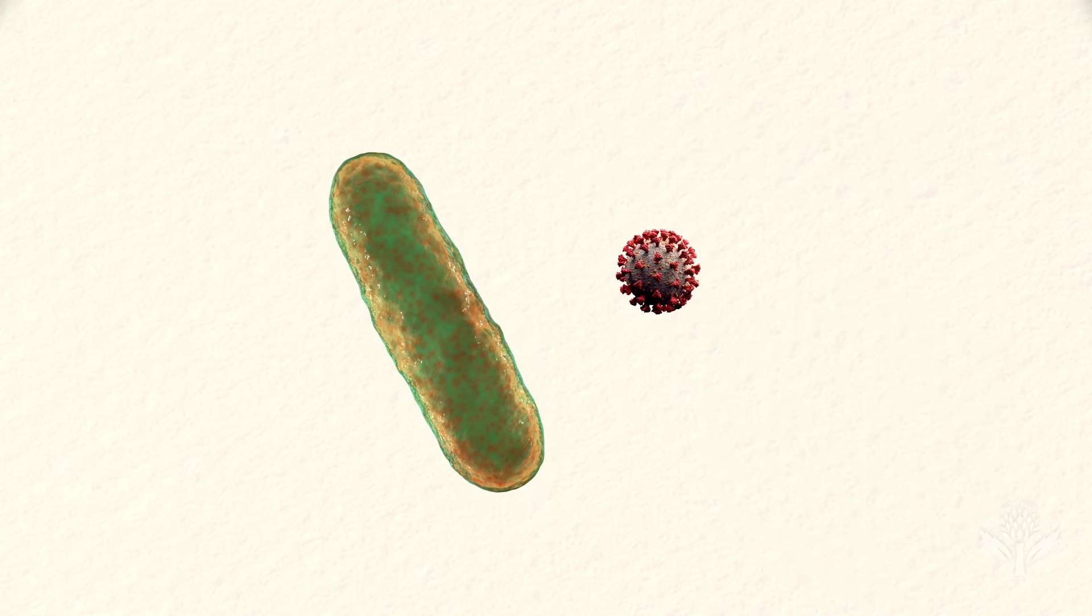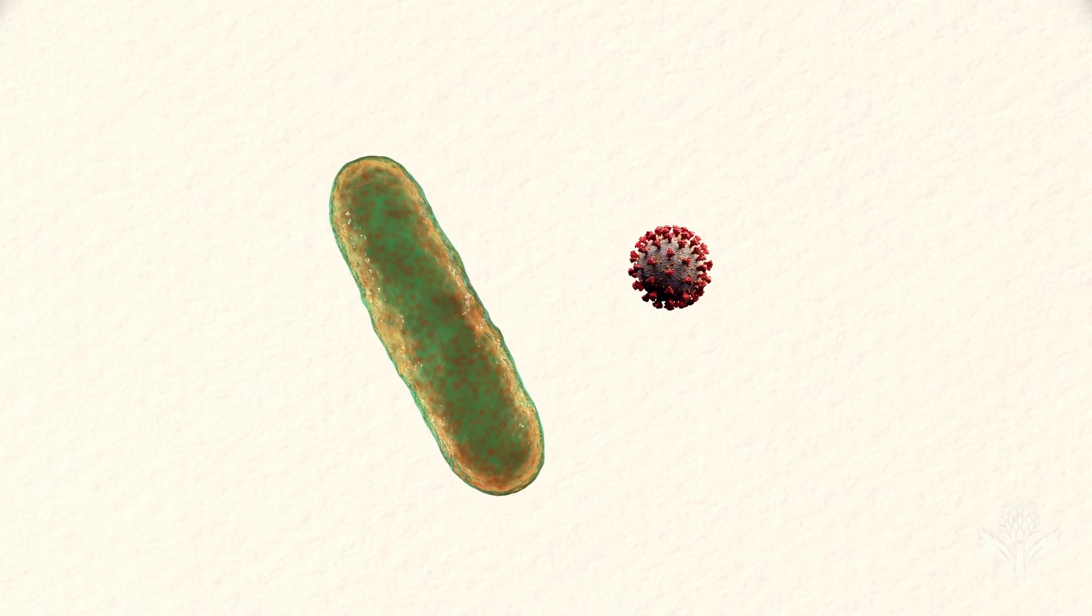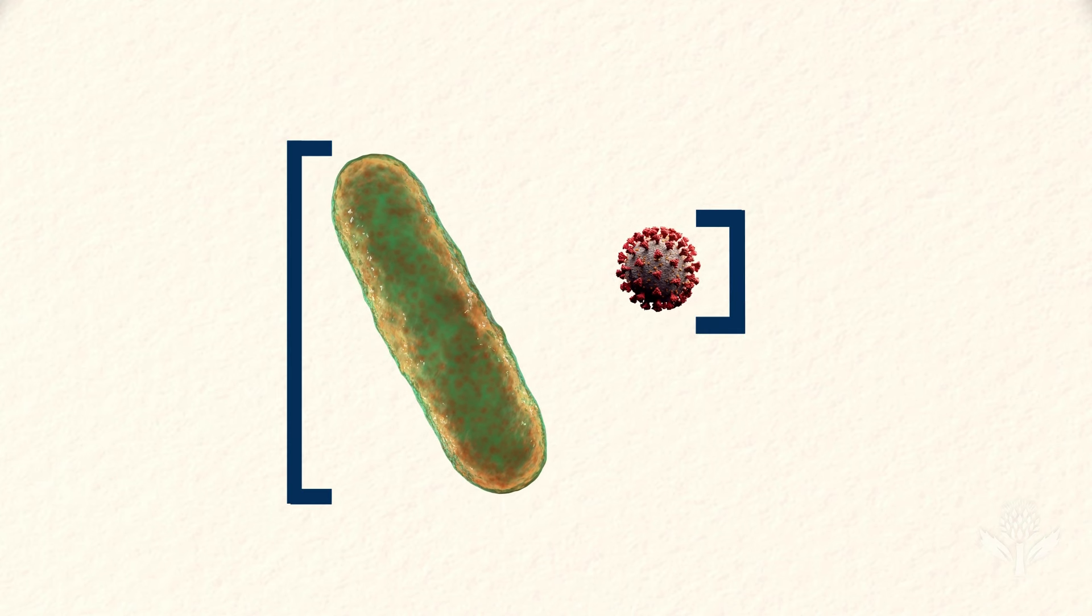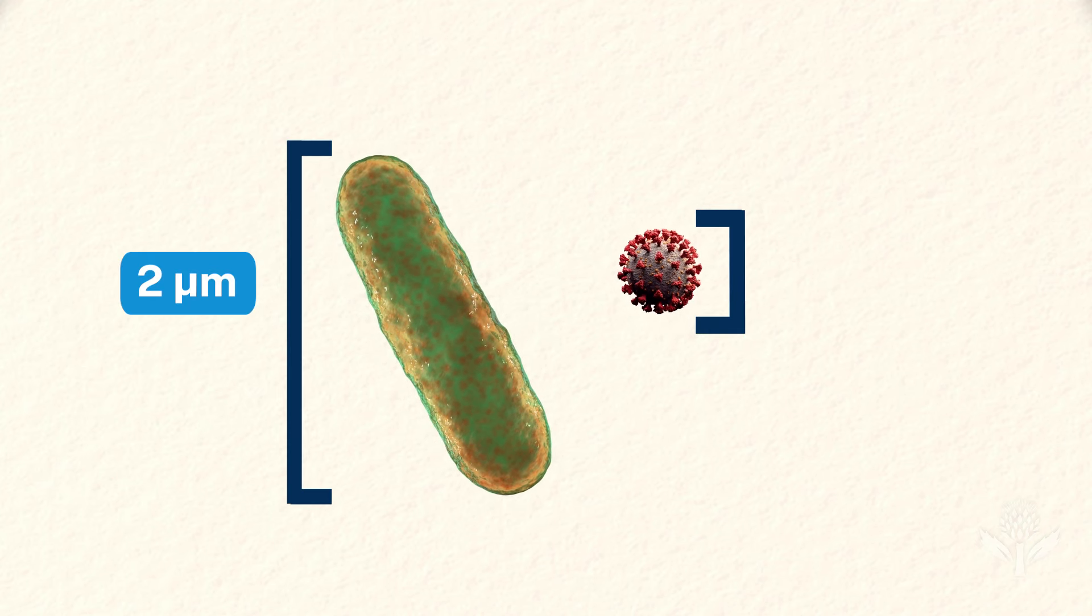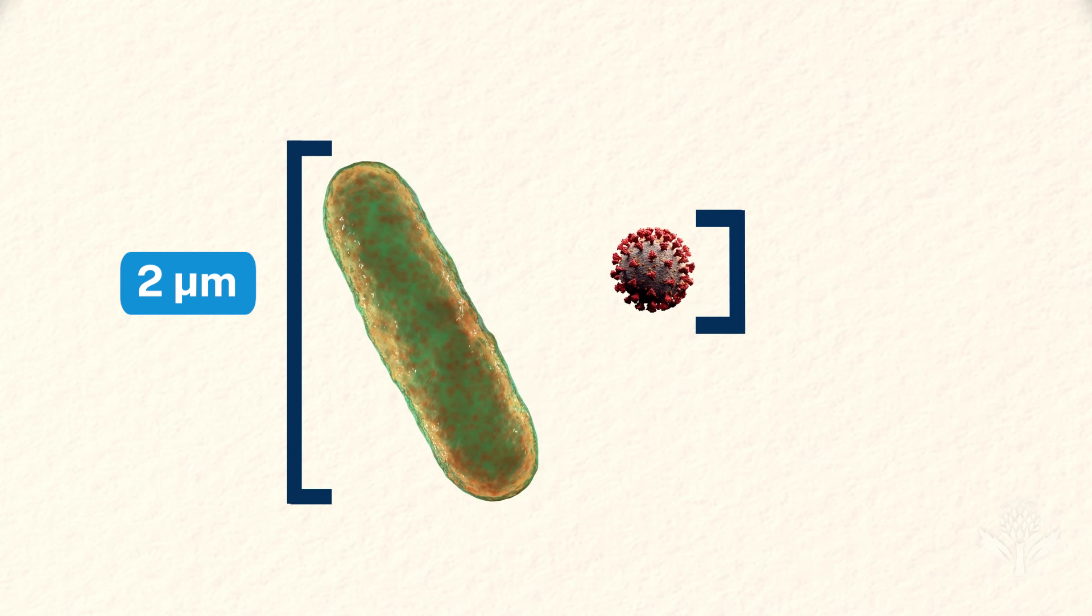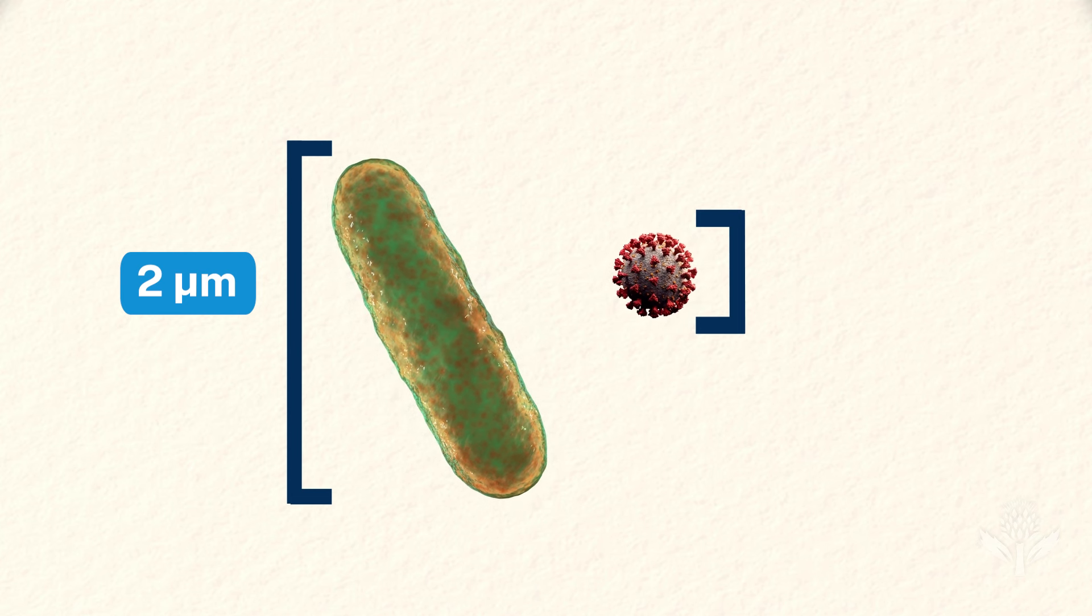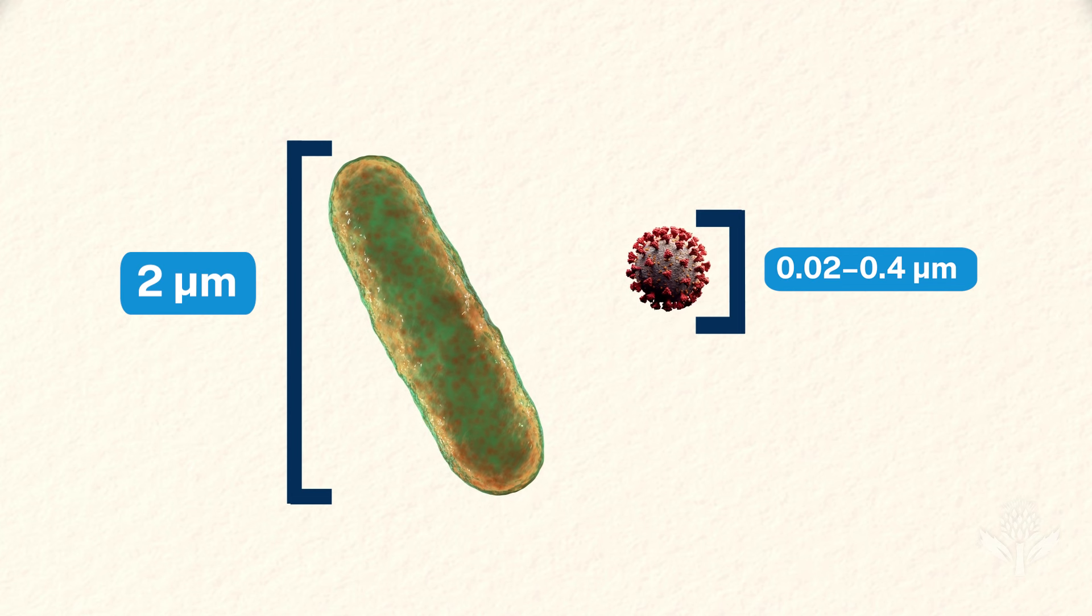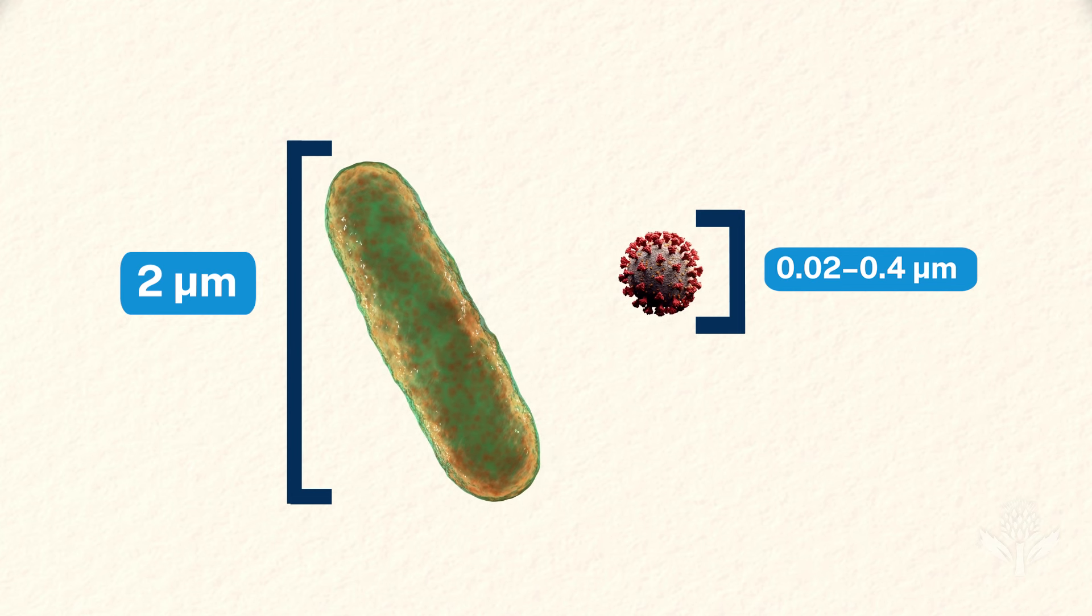The two germs are also drastically different in size. An average-sized bacterium is about 2 micrometers, or two millionths of a meter, in length. Viruses are considerably smaller. Most fall between 0.02 and 0.4 micrometer in length.